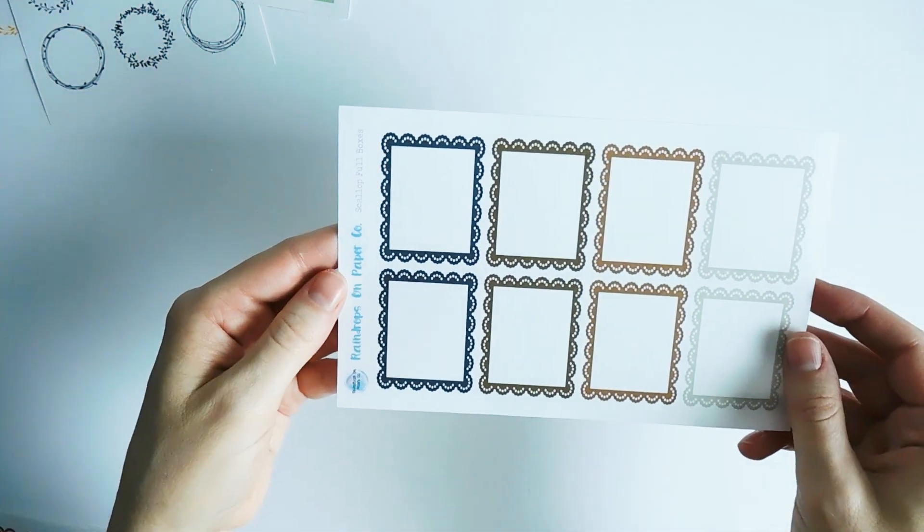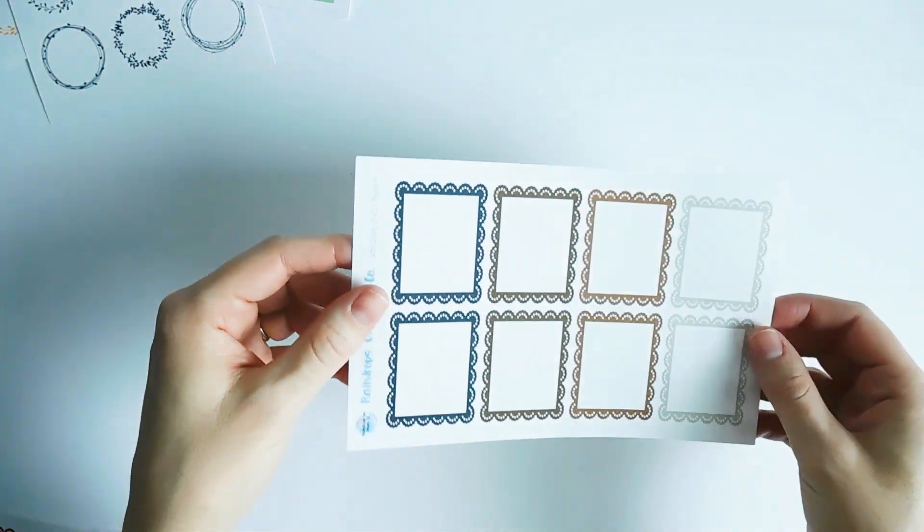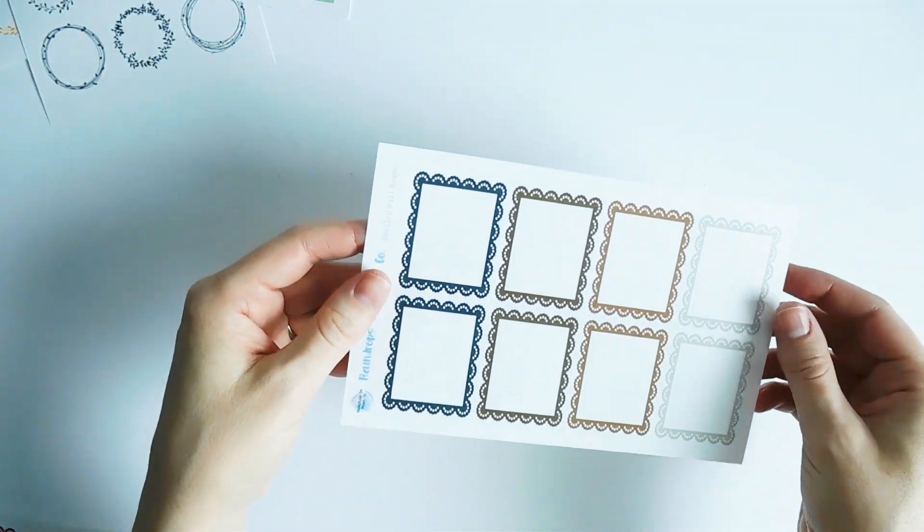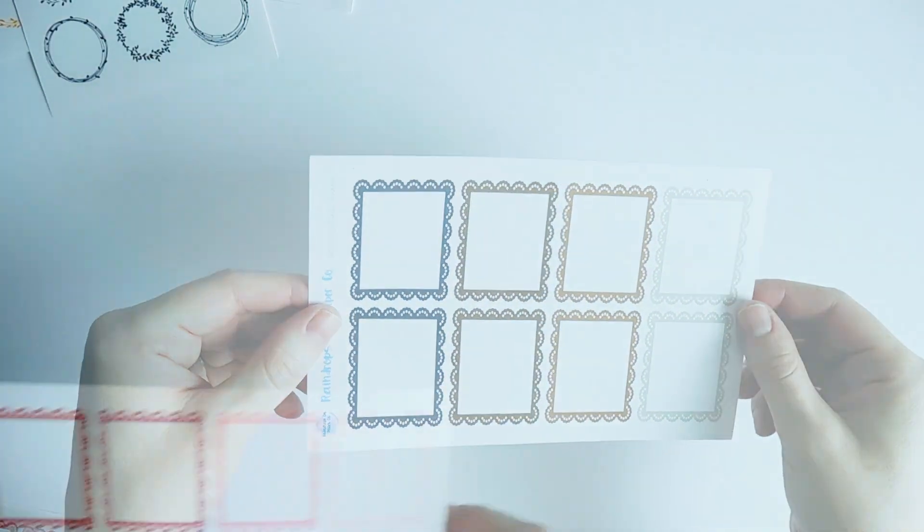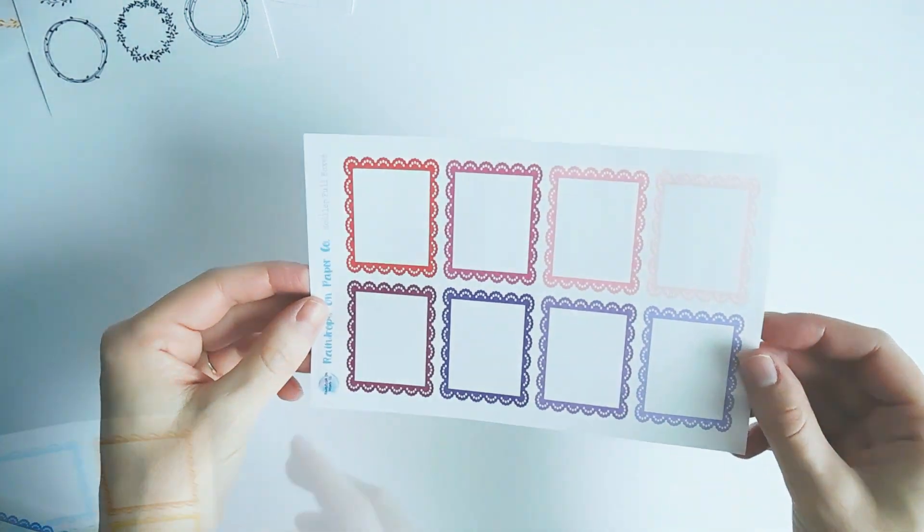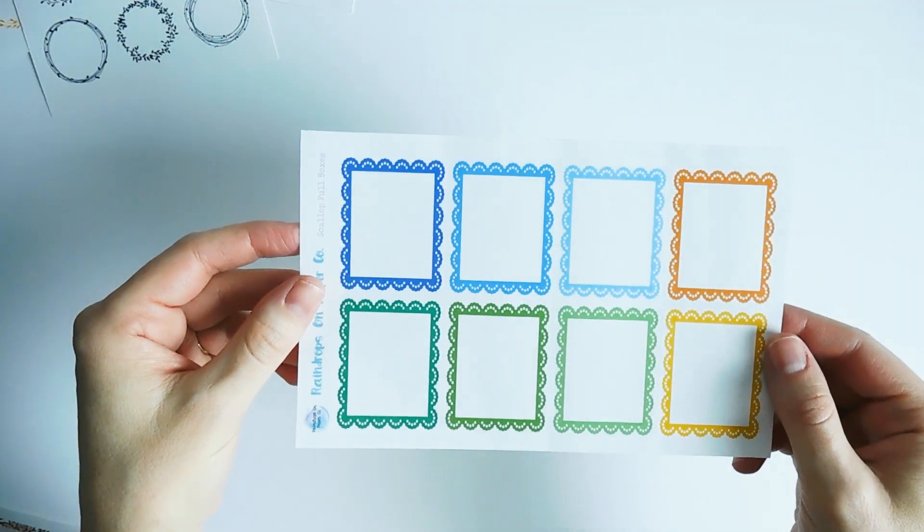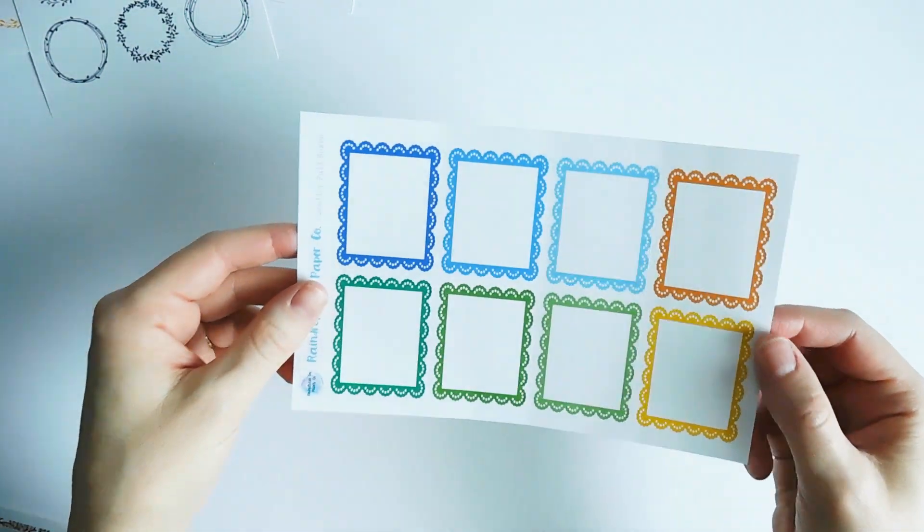And then I offer scallop full boxes. These are sized for the Erin Condren right now, but of course with creativity you can put it in any planner. So we have neutrals here and then we've got reds and pinks and purples, and here are some blues and greens and then orange and yellow.